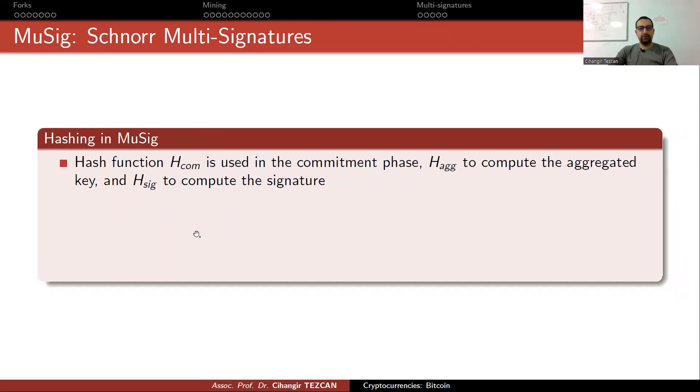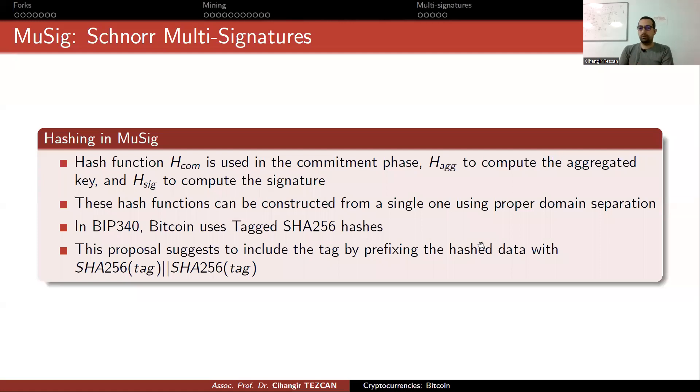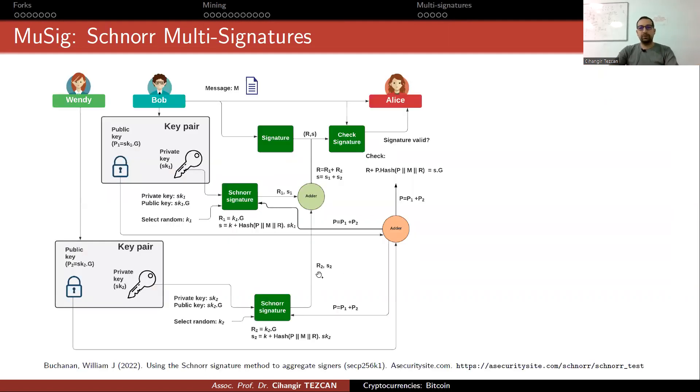So, hashing multi-signature, as I mentioned, there are many different phases. Hash function H_com is used in the commitment phase. H_agg to compute the aggregated key. And H_sig to compute the signature. These hash functions can be constructed from a single one using proper domain separation. In BIP340, Bitcoin uses tagged SHA-256 hashes. This proposal suggests to include the tag by prefixing the hash data with SHA-256 of tag, concatenated with SHA-256 of tag. So, this tag allows you to provide domain separation. And you might think that why I'm doing this twice. Actually, the data size should be 512. This is why they do this.